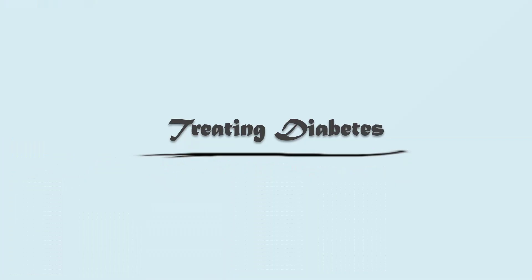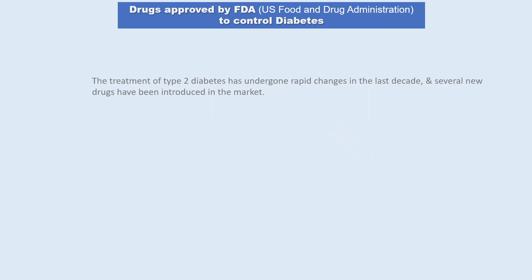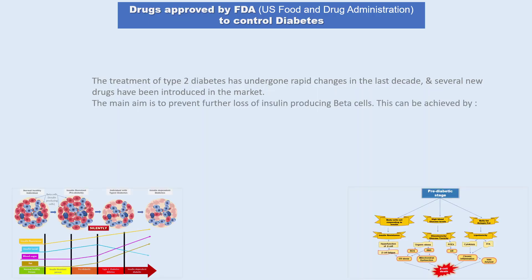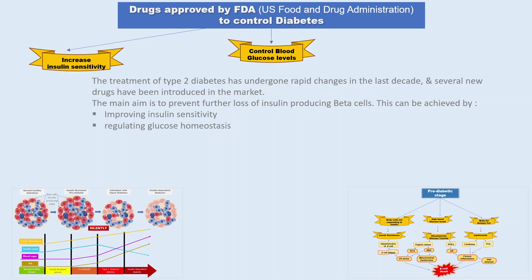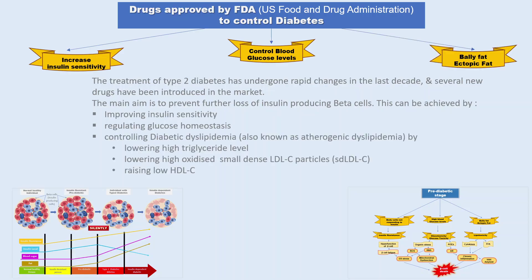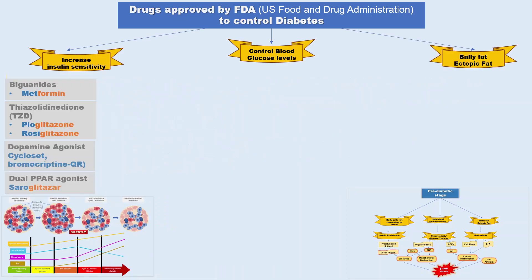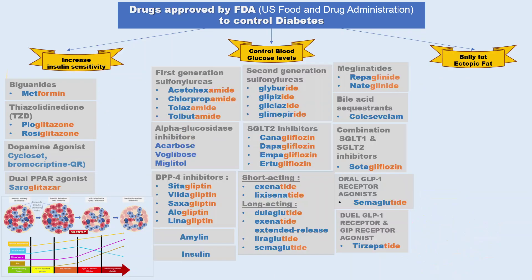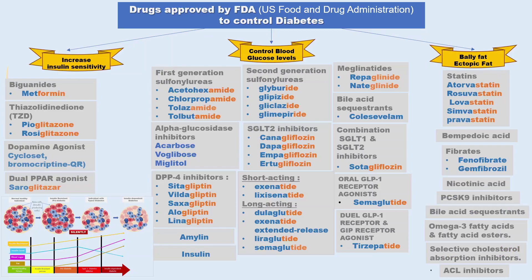The treatment of type 2 diabetes has undergone rapid changes in the last decade and several new drugs have been introduced. The main aim of treatment is to prevent further loss of insulin-producing beta cells. This can be achieved by improving insulin sensitivity, regulating glucose homeostasis, and controlling diabetic dyslipidemia.